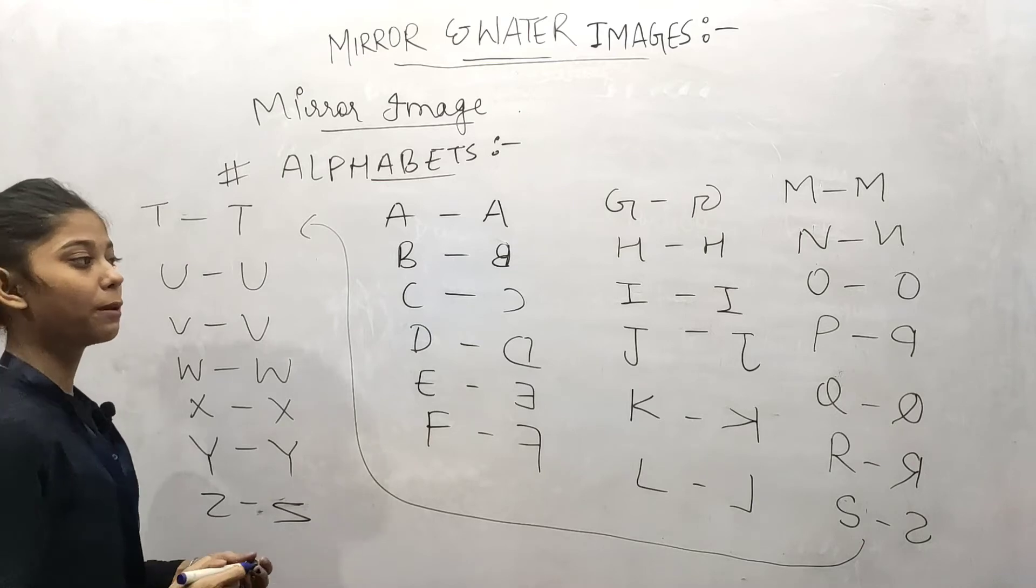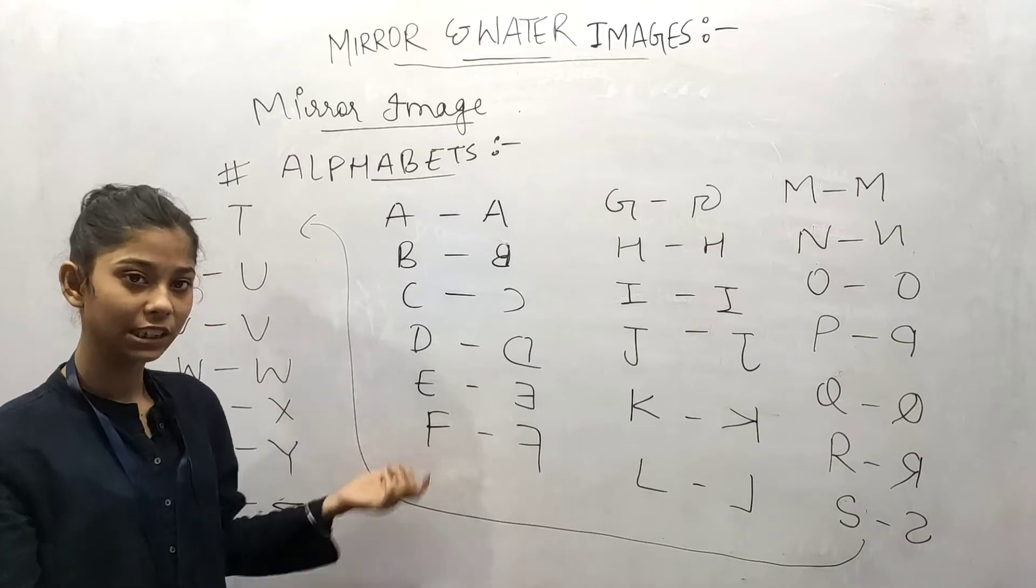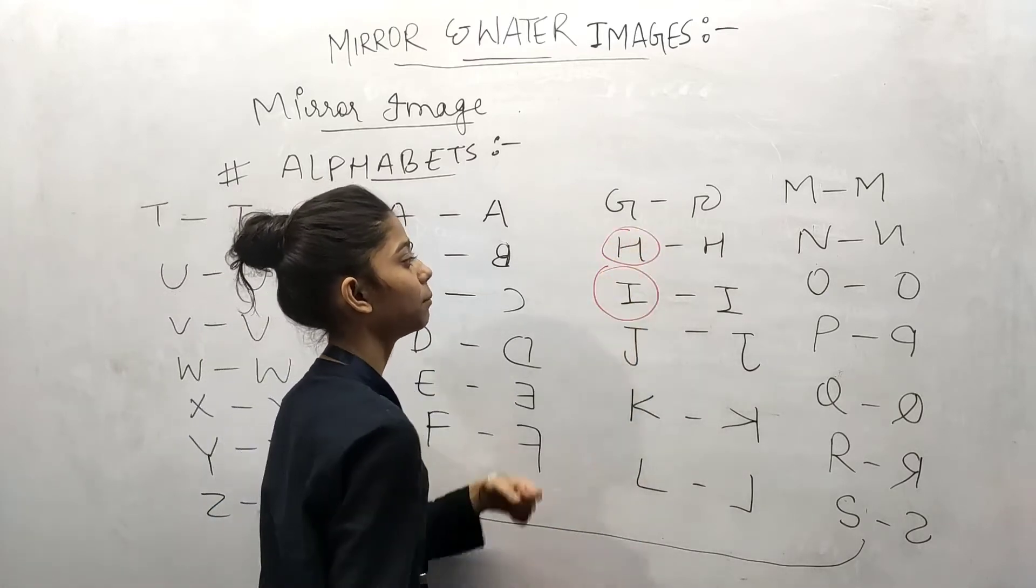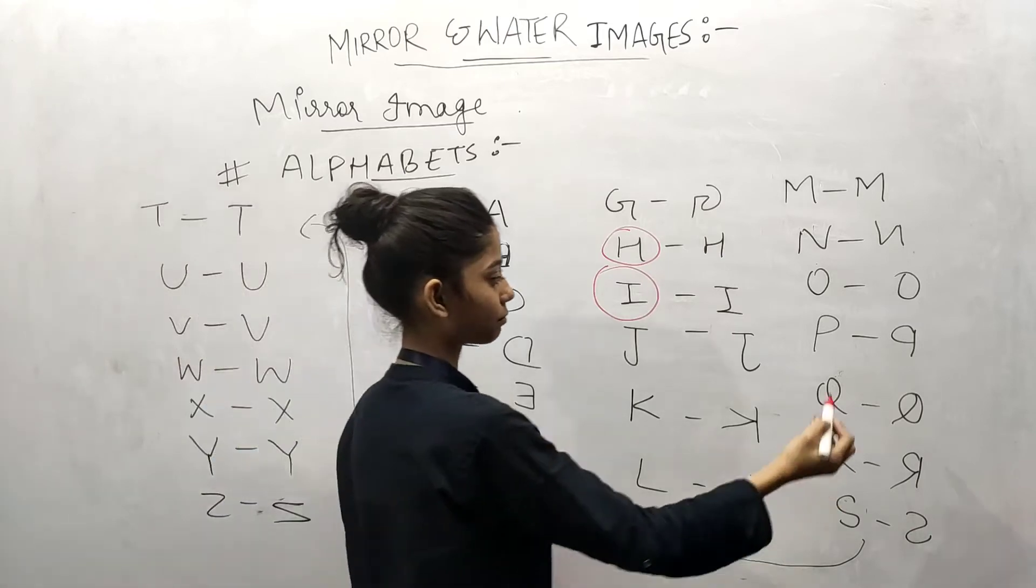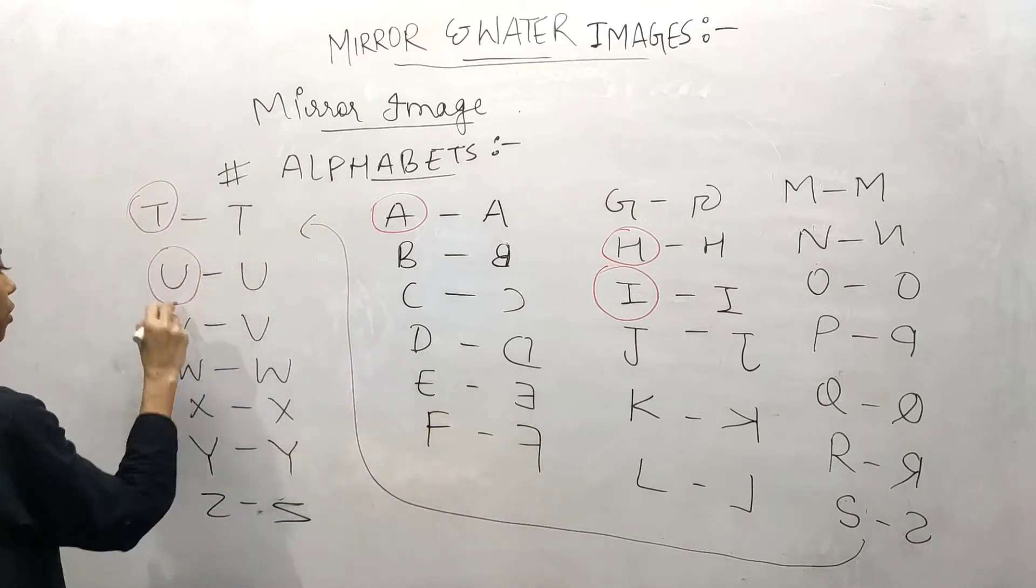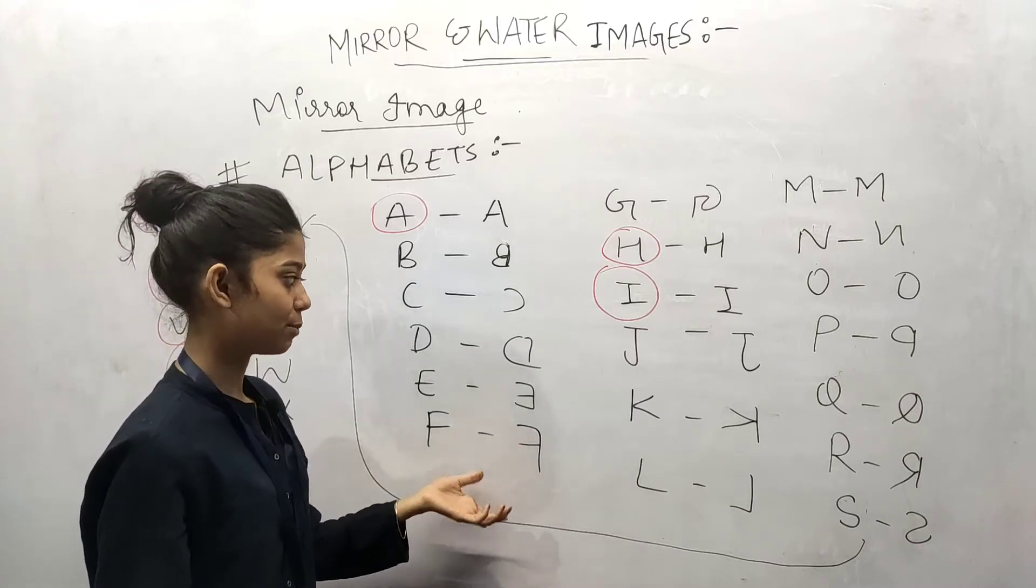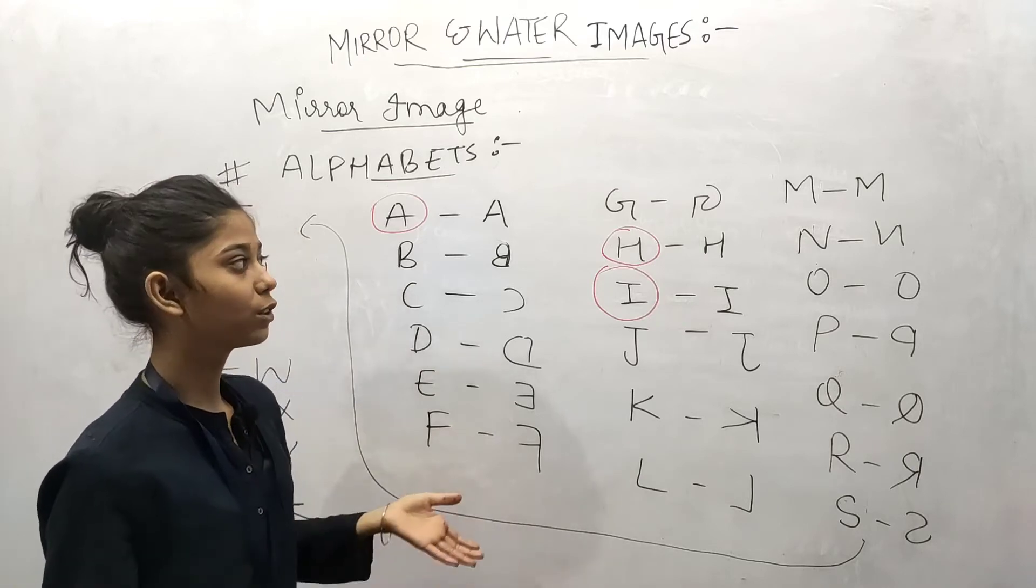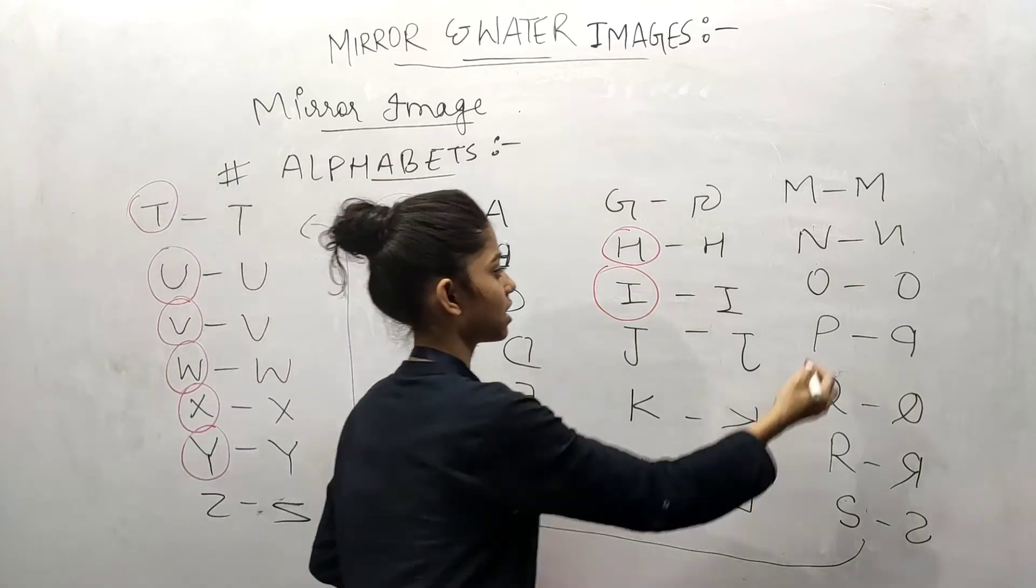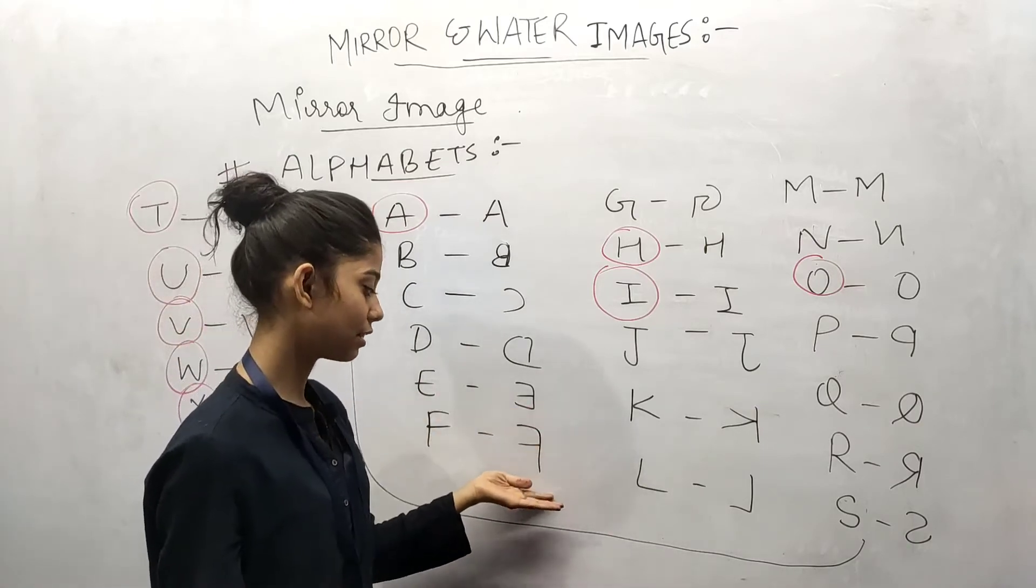So this is the mirror image of the alphabets, the mirror image of the capital letters. So here we notice one thing: H was exactly the same, I was exactly the same, A was exactly the same. After that there was all changed. Then T was just like U, V, W, X, Y. There are some letters that don't change in mirror image. So if you memorize it properly, then if the question comes from these letters, it will become the same. There will also be no time. So you have O.